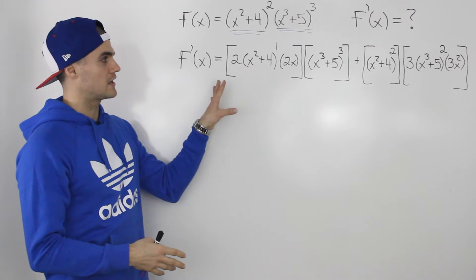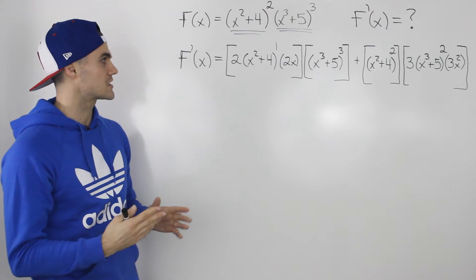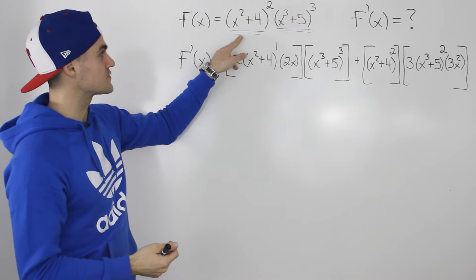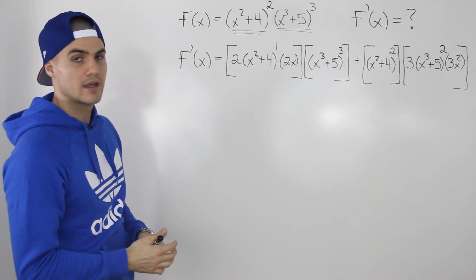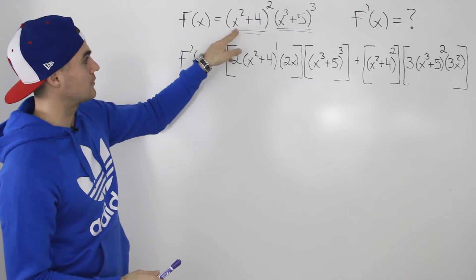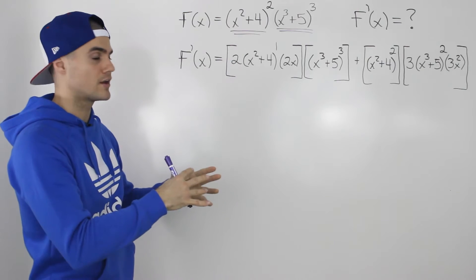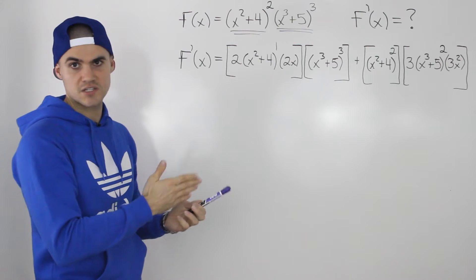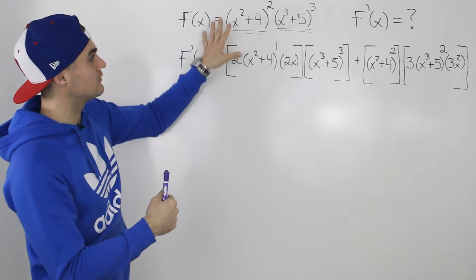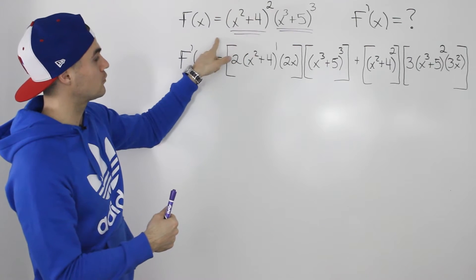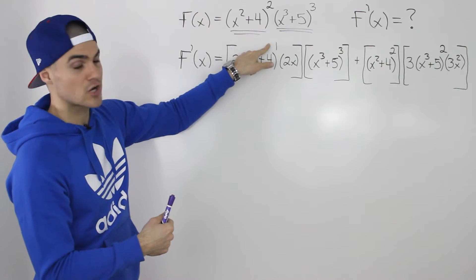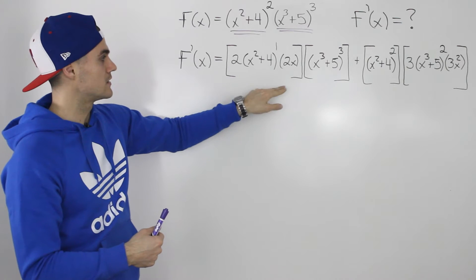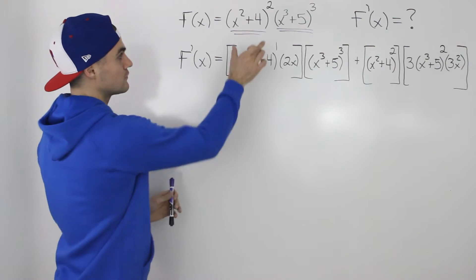When you apply the product rule you'll end up getting this huge expression for the derivative. This first square bracket represents the derivative of that first function, x squared plus 4 to the power of 2. To do that we apply the chain rule, because it's a function x squared plus 4 within another function — the power of a function rule. We take the derivative of the outer function first: apply the power rule, bring the 2 down, inner function stays the same, subtract one from the exponent, then multiply by the derivative of the inner function, which is 2x. That's what that first bracket represents.